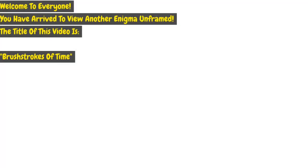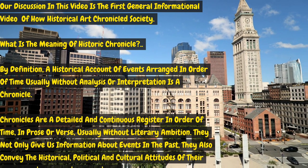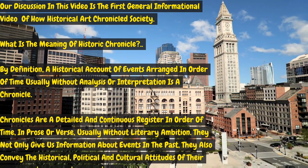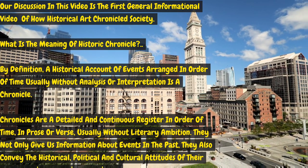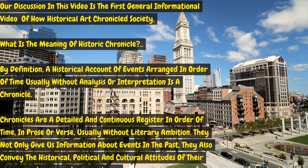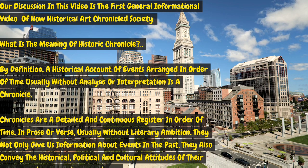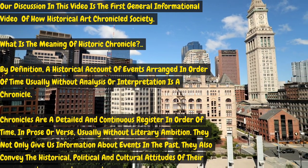Welcome to Enigma Unframed. The title of this video is 'Brushstrokes of Time.' Our discussion is the first general informational video of how historical art chronicled society. By definition, a chronicle is a historical account of events arranged in order of time, usually without analysis or interpretation — a detailed and continuous register in prose or verse, conveying historical, political, and cultural attitudes of their writers.